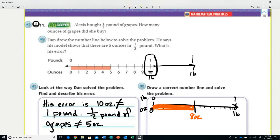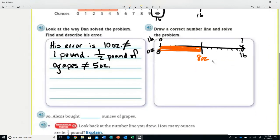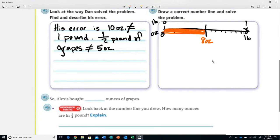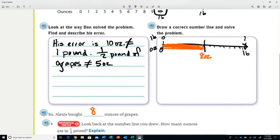So if you had half a pound of grapes, you would have eight ounces of grapes. If you need to listen to this more than once, that is not a problem. So down here we're going to start answering some questions. Alexis bought eight ounces of grapes. Look back at the number line you drew. How many ounces are in a fourth of a pound?